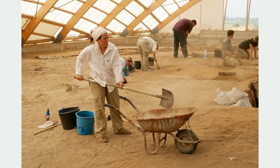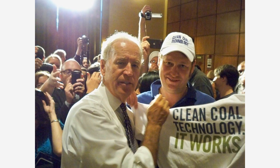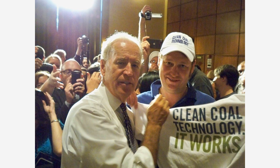4. Physical remediation involves the use of physical processes such as excavation and dredging to remove contaminated soil and sediment. 5. Environmental regulations can be used to prevent pollution by setting limits on the amount of pollutants that can be released into the environment. These regulations can also require industries to use clean technologies and practices to reduce pollution. It is essential to use a combination of these techniques to effectively remediate pollution.